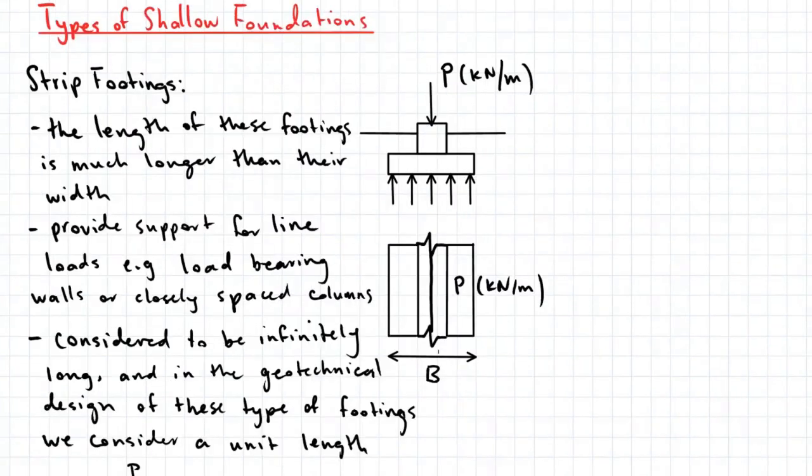In strip footings, the length is typically much longer than the width. Strip footings provide support for line loads, for example load-bearing walls or closely spaced columns.